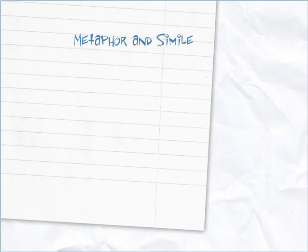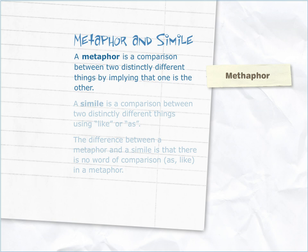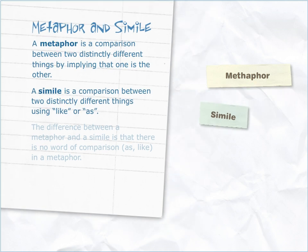Metaphor and simile. A metaphor is a comparison between two distinctly different things by implying that one is the other. A simile is a comparison between two distinctly different things using like or as.